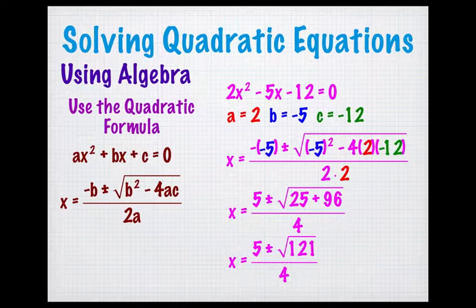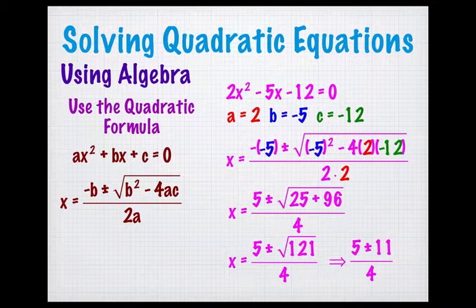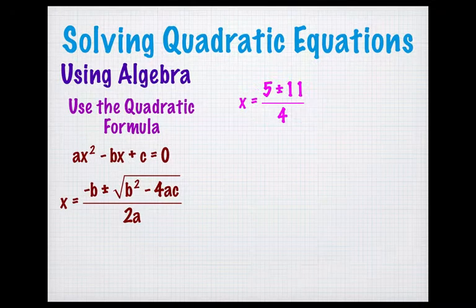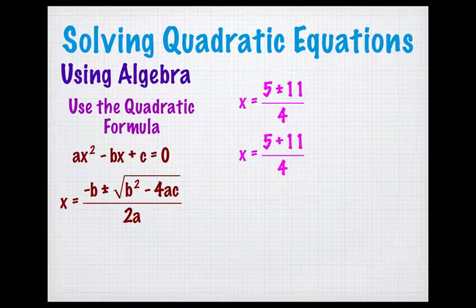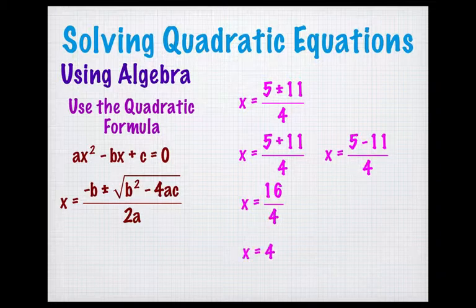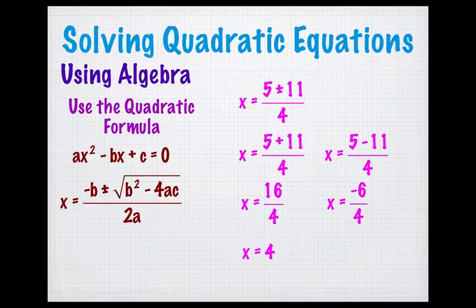Notice that I have the square root of 121, that's a perfect square, and when I have a square root of a perfect square like this, you want to replace it with its square root, so I have 5 plus or minus 11 over 4. Now that gets split into two equations, one with the plus and one with the minus, and then you do the arithmetic. For the plus side, x equals 4, and for the minus side, x equals negative 3 halves.